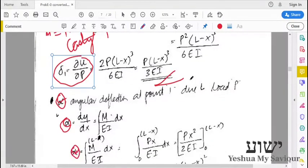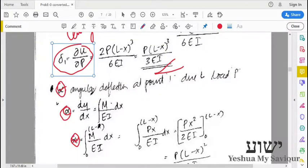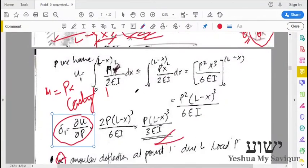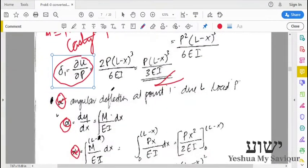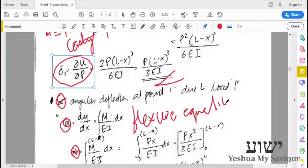So next is, we have to find the angle of deflection, that is, the curvature at point 1. So for that, we have theta is dy by dx is equal to integral of m by EI dx. This is from the flexure equation.